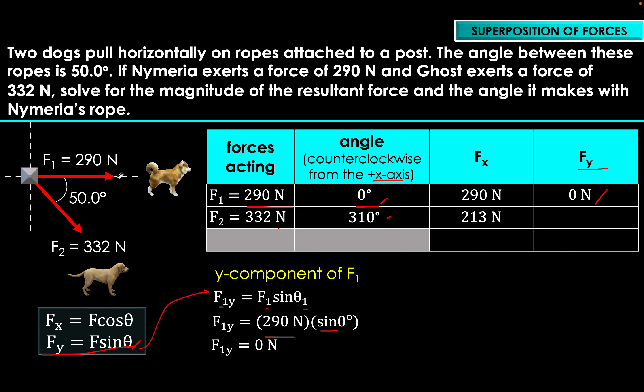For force number two (Ghost): Fy₂ = 332 Newtons × sine(310°). Using your calculator, you should get negative 254 Newtons for the y-component of Ghost's force.